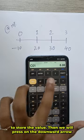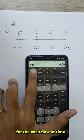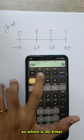Then we'll press on the downward arrow and this stands for the cash flow at time 1 which is 20 enter.